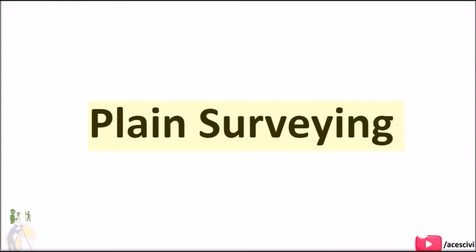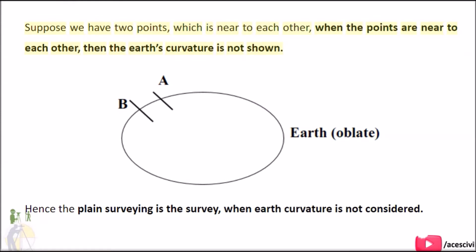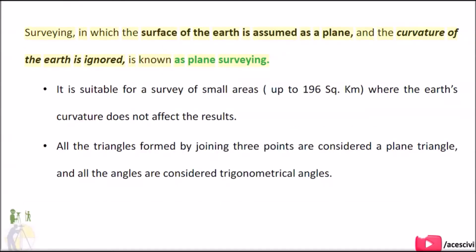Plane surveying: suppose we have two points which are near to each other. When the points are near to each other, the Earth's curvature is not shown. Hence, plane surveying is the survey in which the Earth's curvature is not considered. The surface of the Earth is assumed as a plane and the curvature is ignored. It is suitable for a survey of small areas up to 196 square km, where the Earth's curvature does not affect the results.